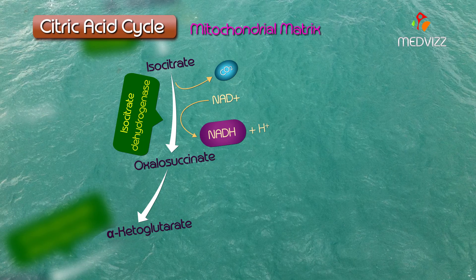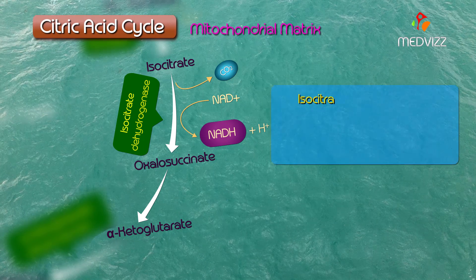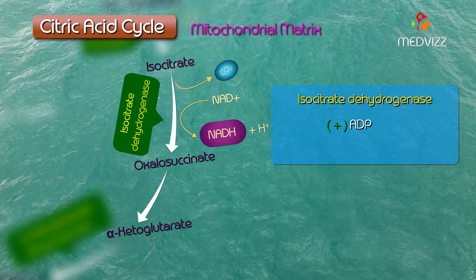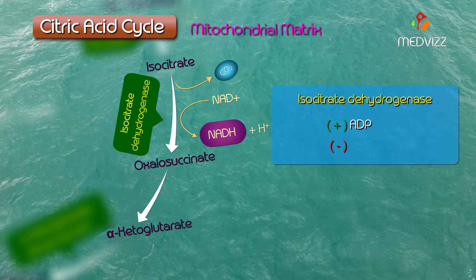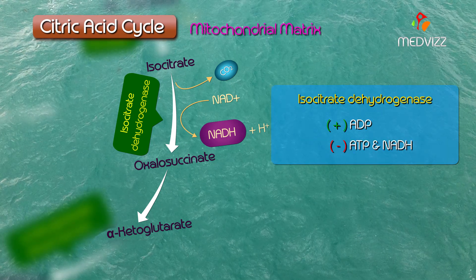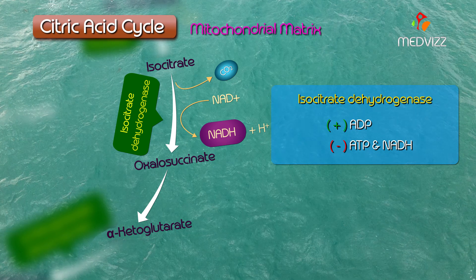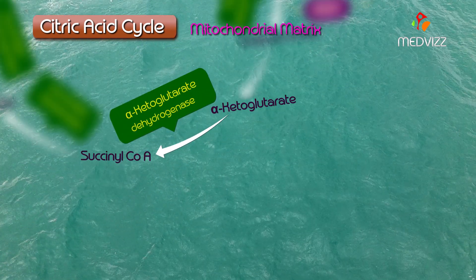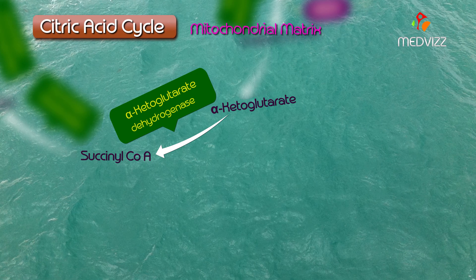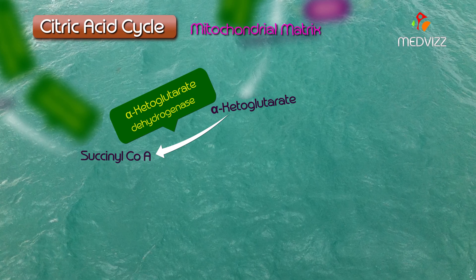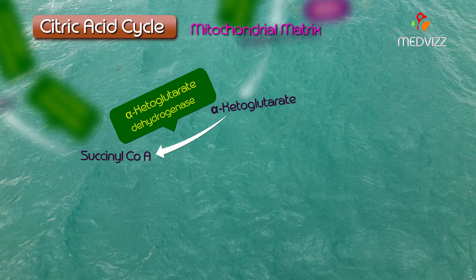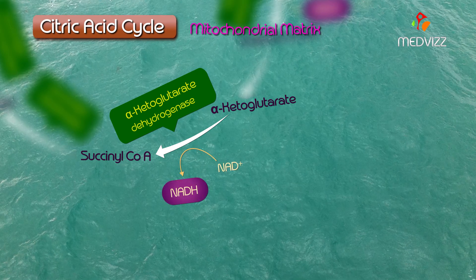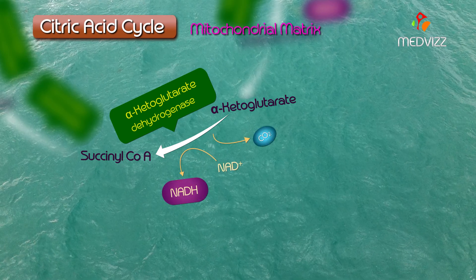Isocitrate dehydrogenase is also a key regulatory step, stimulated by ADP (low energy state) and inhibited by ATP and NADH (high energy state). The alpha-ketoglutarate dehydrogenase complex converts alpha-ketoglutarate into succinyl-CoA, also converting NAD+ into NADH and releasing the second molecule of carbon dioxide.